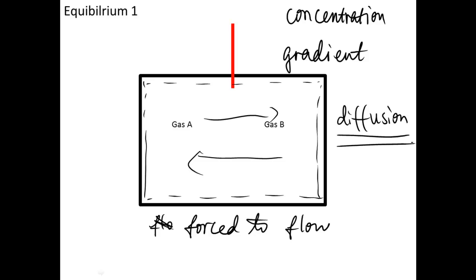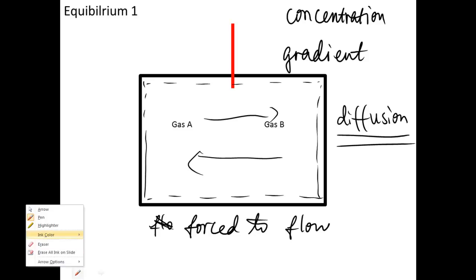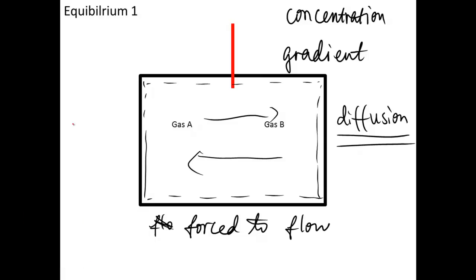This process comes to an end when the system becomes a homogeneous system — that means there is no concentration difference. At that point, the system reaches a dynamic equilibrium.